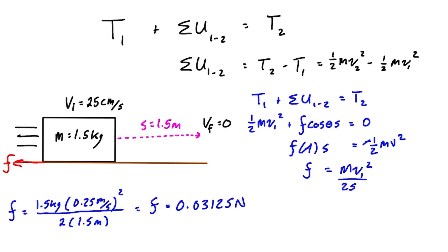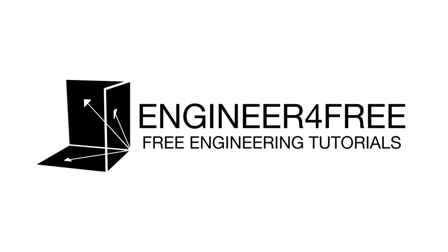wanted to find the work done by the friction force, we can really easily do that. That is that whole term, sum of work done from 1 to 2, and that's just equal to the force of friction times cos(θ) times s. So we have 0.03125 newtons times cos(180) times s, which is 1.5 meters, which gives us a final value for the work done of negative 0.046875 newton-meters, which is also joules.